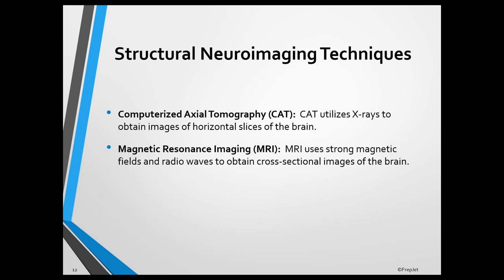Computerized axial tomography is also known as computed axial tomography, or just computed tomography. It uses x-rays to obtain images of horizontal slices of the brain.